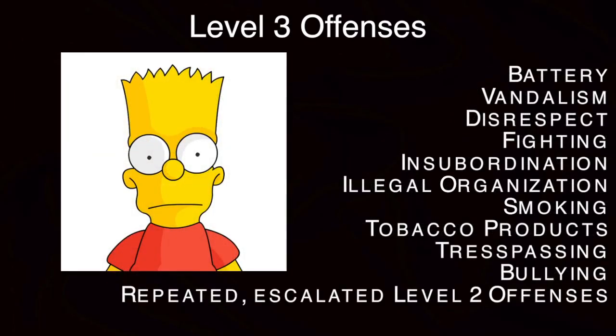Good morning again Mustangs. We will now discuss level 3 offenses and some of the consequences that come with them. Some of these offenses include battery, vandalism, disrespect, fighting, gross insubordination, illegal organization, possession of contraband material, smoking, use of or possession of tobacco products, trespassing, bullying, and other serious misconduct.